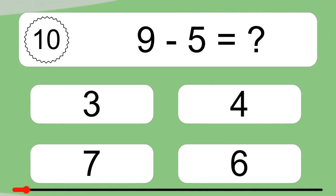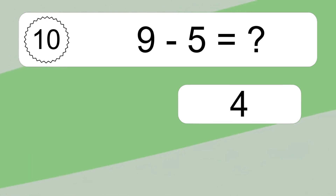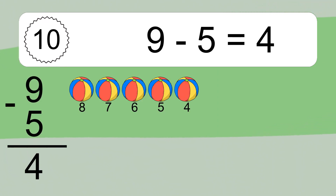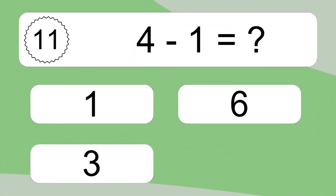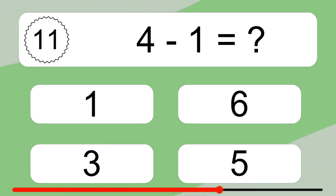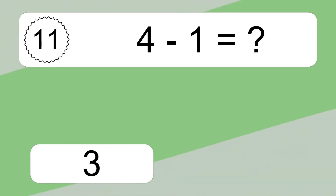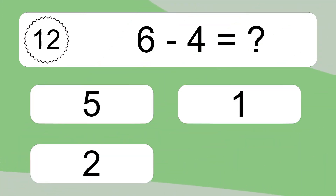9 minus 5 equals 4. Let's count it: 6, 5, 4, 3, 2. 4 minus 1 equals what?